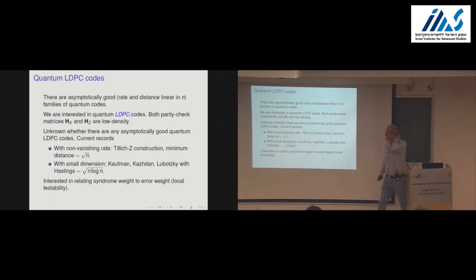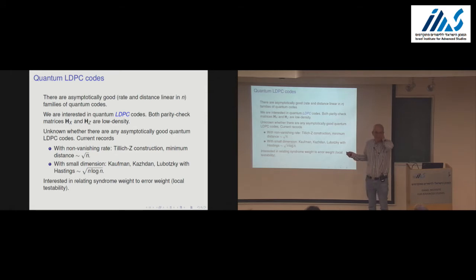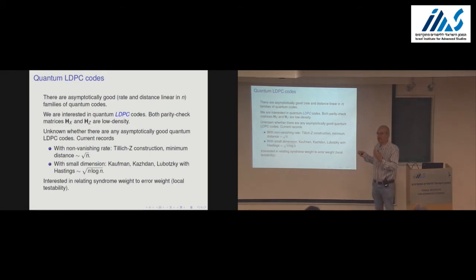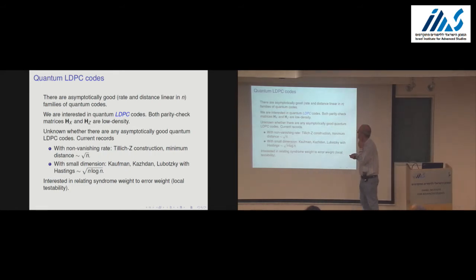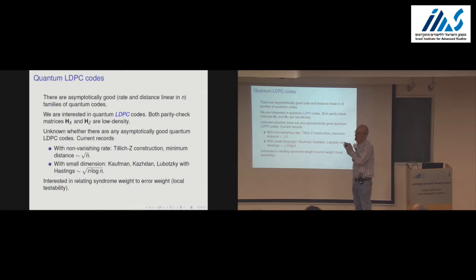Can you define low density? Low density means that both matrices, in the strict case, have constant weight rows. The codes I'll be looking at have low density in a slightly weak sense — the weight of the rows is allowed to grow very slowly, like log of the block length. Both rows and columns will have low weights.